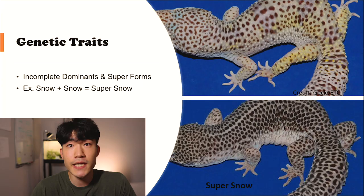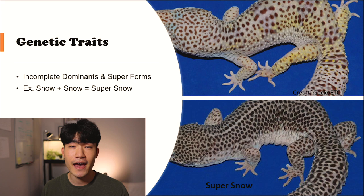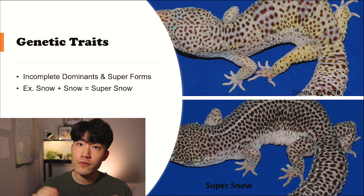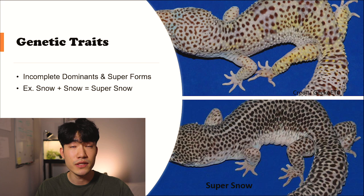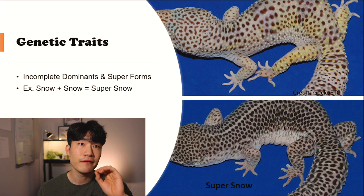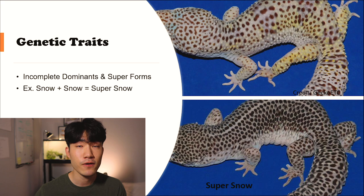Now for the genetic traits. Super Snow is one of the cool things that happens with the MAC Snow line. Because MAC Snow is incomplete dominant, when you pair MAC Snow to MAC Snow, it becomes Super Snow. That is the main reason why a lot of people work with MAC Snow for their projects — you can create really good ones with Super Snow. I personally like Super Snow MAC Snow lines and I have both in my projects. It is incomplete dominant and it can be a super form. For example, if you have Super Snow with MAC Snow together, it becomes 50% MAC Snow and 50% Super Snow. I'll have all those details at the end of the video.